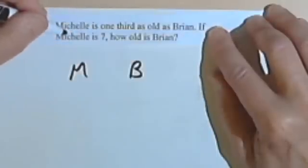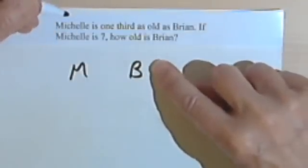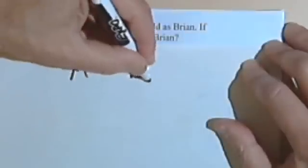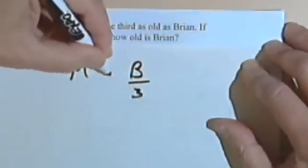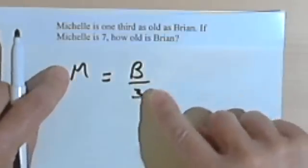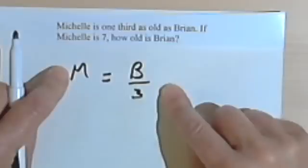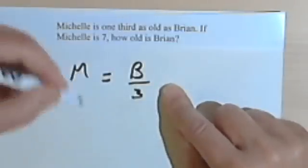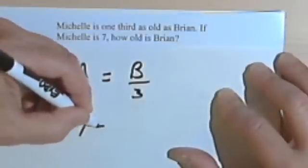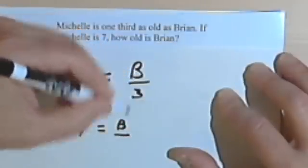That would mean that if we knew one-third of Brian's age, that would be the same as Michelle's age. So we should take Brian's age and divide it by 3, and then we would have an equation that balanced. Michelle's age is one-third of Brian's age. Now, it says that Michelle is 7. So instead of using an M, I can just write a 7.